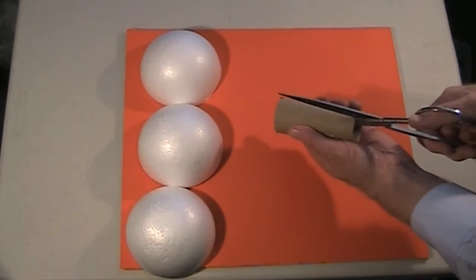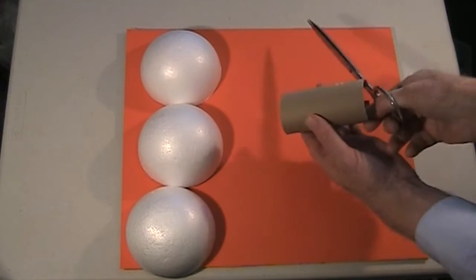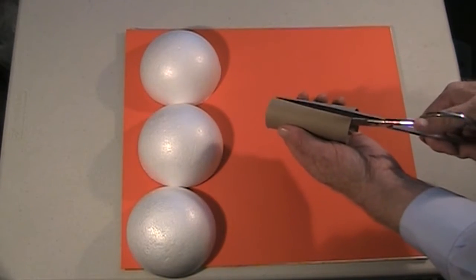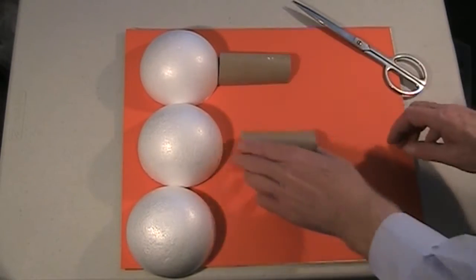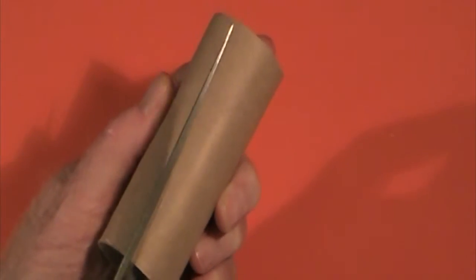Now, take the first toilet paper roll and carefully cut down the length of it. Turn it over and cut down the opposite side. These will be your tunnels. Take the other roll and cut it the same way.